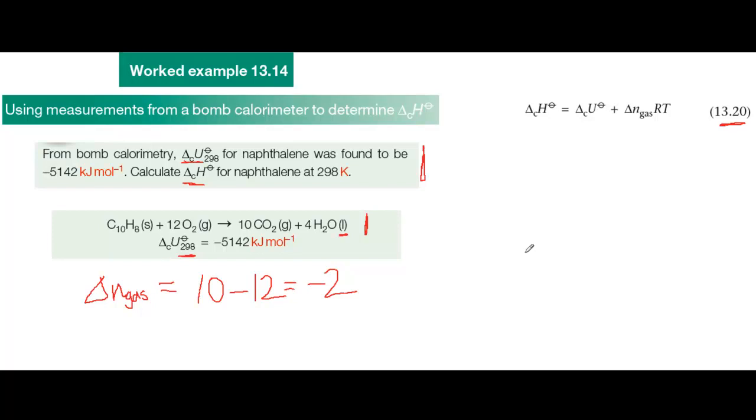Now all you need to do is to substitute values into equation 13.20, but remember that you need to convert delta U to joules per mole from kilojoules per mole which is the value that's been given. The answer gives delta H combustion at standard at 298K as minus 5147 kilojoules per mole.